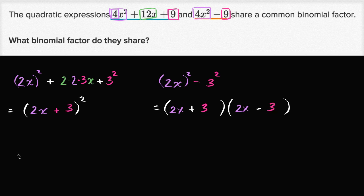And so what is their common binomial factor? Well they both involve, when you factor them out, they both have a binomial factor of 2x + 3. This one right over here, we could rewrite if we want. We could rewrite it as (2x + 3)(2x + 3). That might have been somewhat obvious to you already.